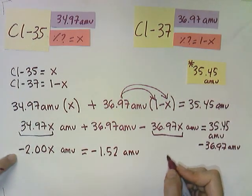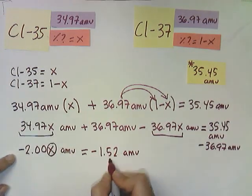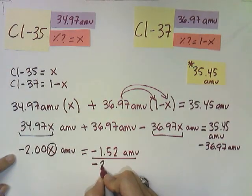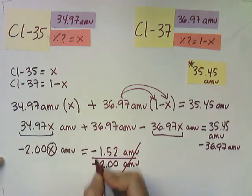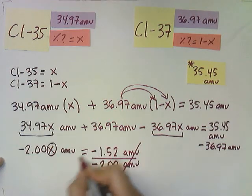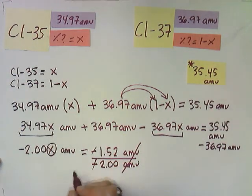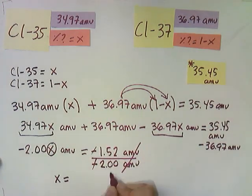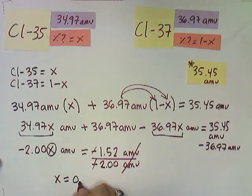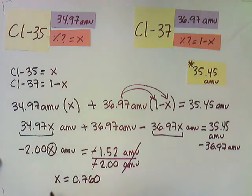My next step would be, if I want to solve for x, then I have to divide this number. So I divide by negative 2.00 AMUs. So my units are cancelled, and negative and negative, that will be positive. So these are cancelled as well. This will be a positive number. And I know that x will be equal to 1.52 divided by 2.00 is 0.760. So this will be x.